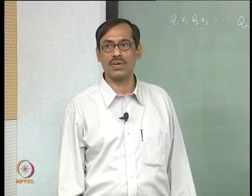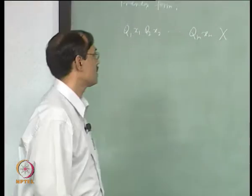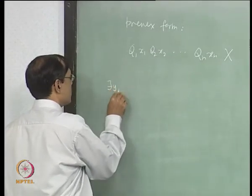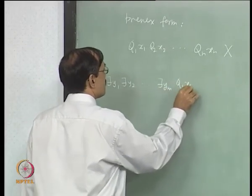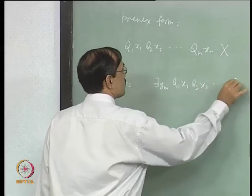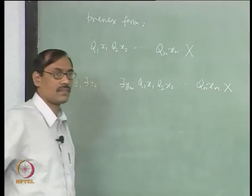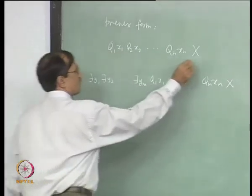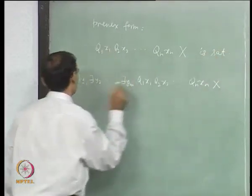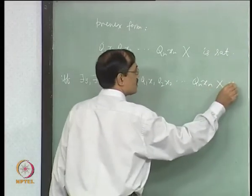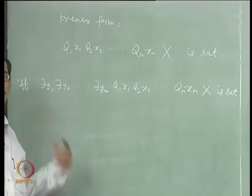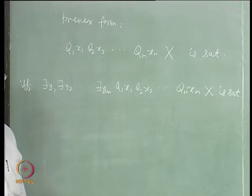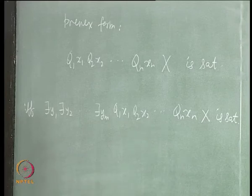Suppose we have free variables y₁ to yₘ in x. Then we can take ∃y₁, ∃y₂, ..., ∃yₘ, then Q₁x₁, Q₂x₂, ..., Qₙxₙ, x. We say that this formula is satisfiable if and only if its universal closure is also satisfiable. Now we have reached one sentence which is satisfiable or not. Our aim is to get rid of the prefix from this sentence somehow, still preserving satisfiability.